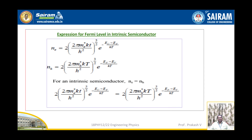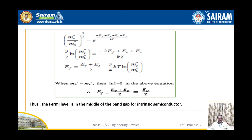Expression for Fermi energy level in an intrinsic semiconductor. We already know the expressions for Ne and Nh, and since for an intrinsic semiconductor Ne equals Nh, after simplifications we get (m_e* / m_h*)^(2/3) equals e^(-(E_F - E_V + E_C - E_F)/kT). Finally, after simplifications, we get E_F equals (E_V + E_C) / 2, which equals E_G / 2, where E_G is the energy gap. Thus, the Fermi energy level is in the middle of the band gap of an intrinsic semiconductor.